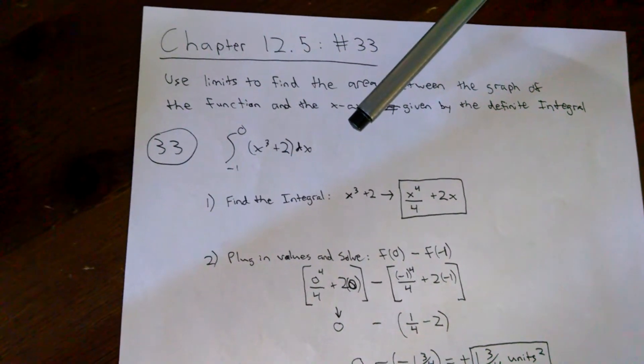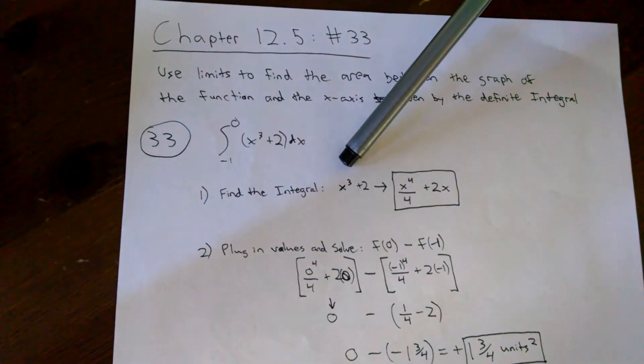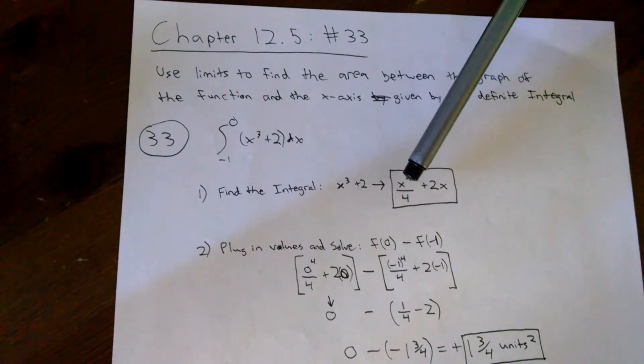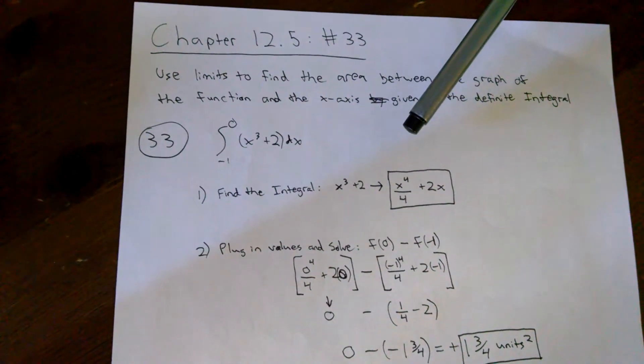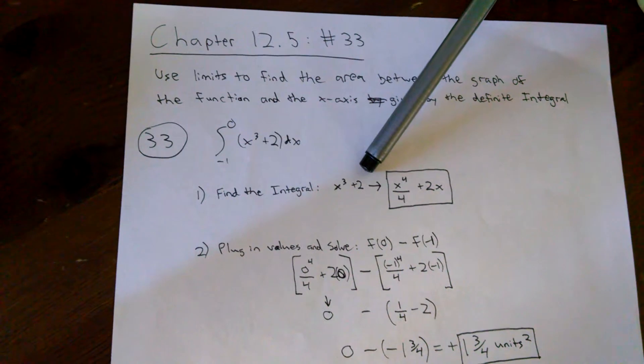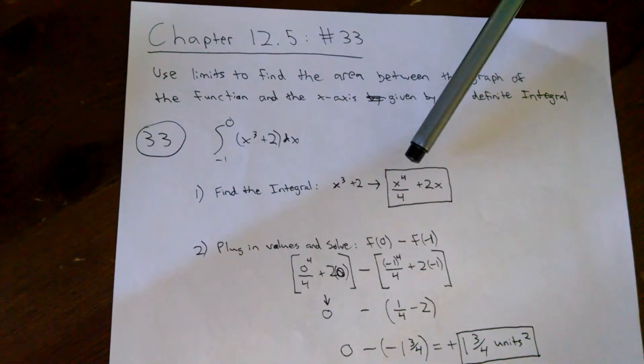The first step is to find the integral. Starting with x³ + 2, we look at the first exponent and add 1, which gives us x⁴. Then we divide by that same number, giving us x⁴/4. For the constant 2, we can imagine it has an x⁰ next to it. Adding 1 to 0 gives us plus 2x.